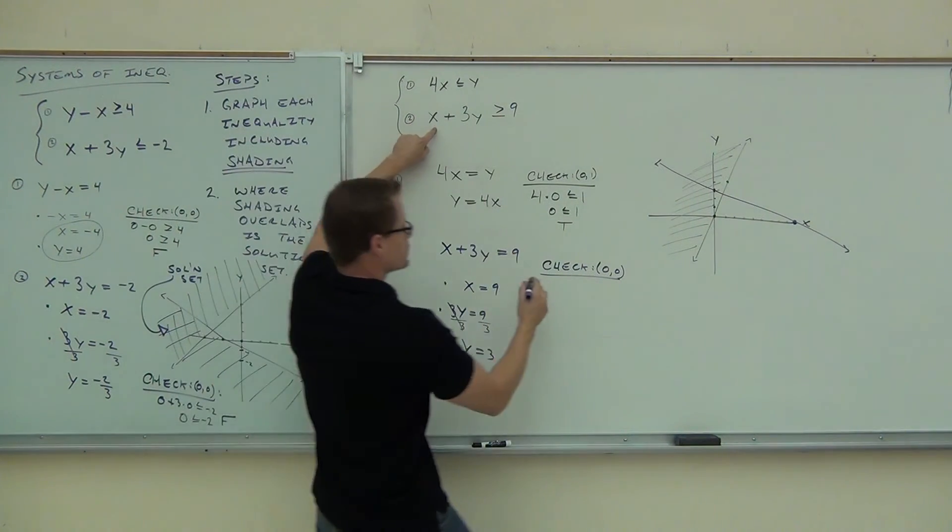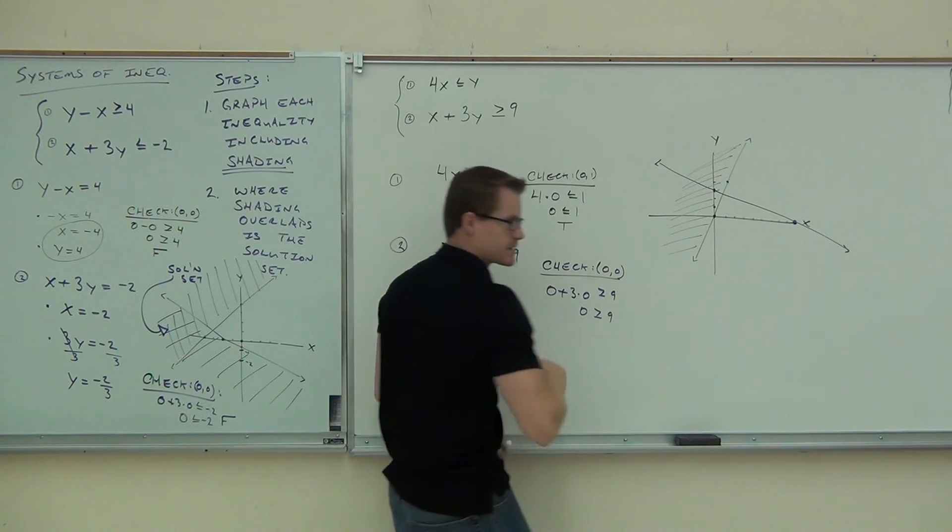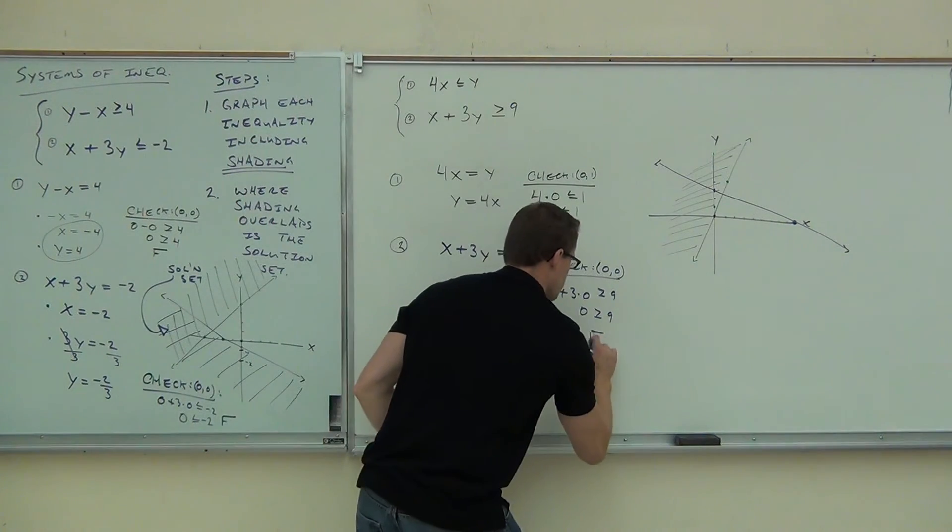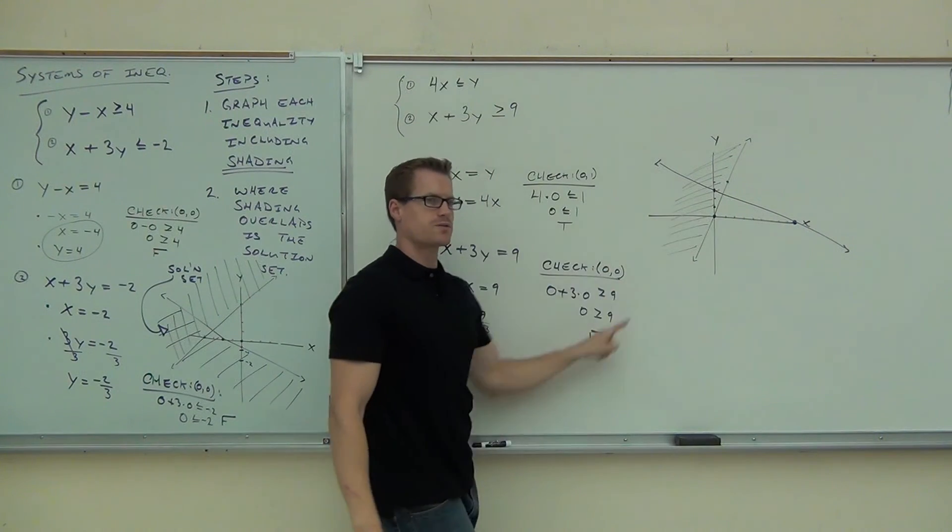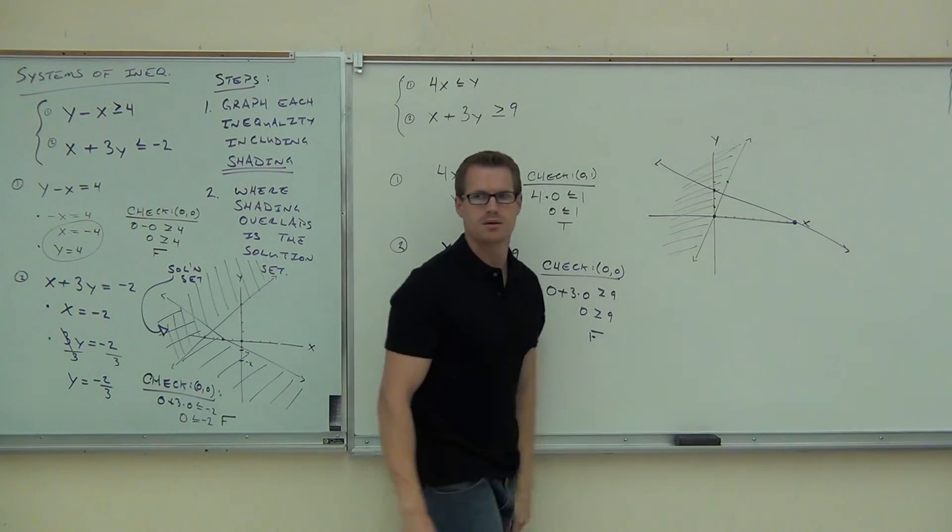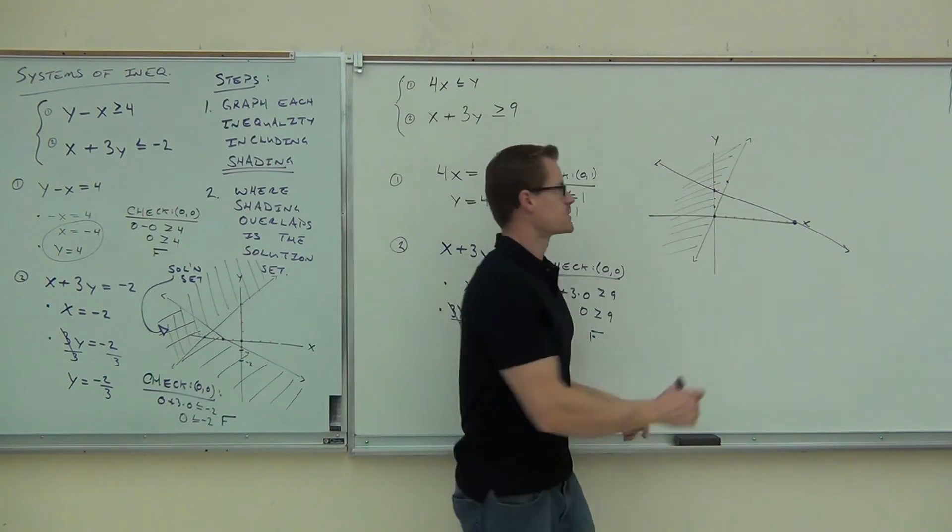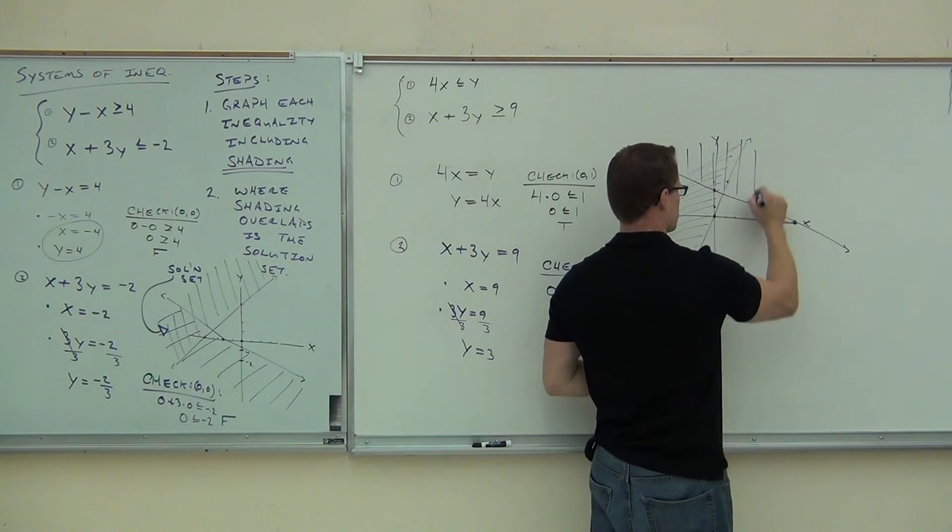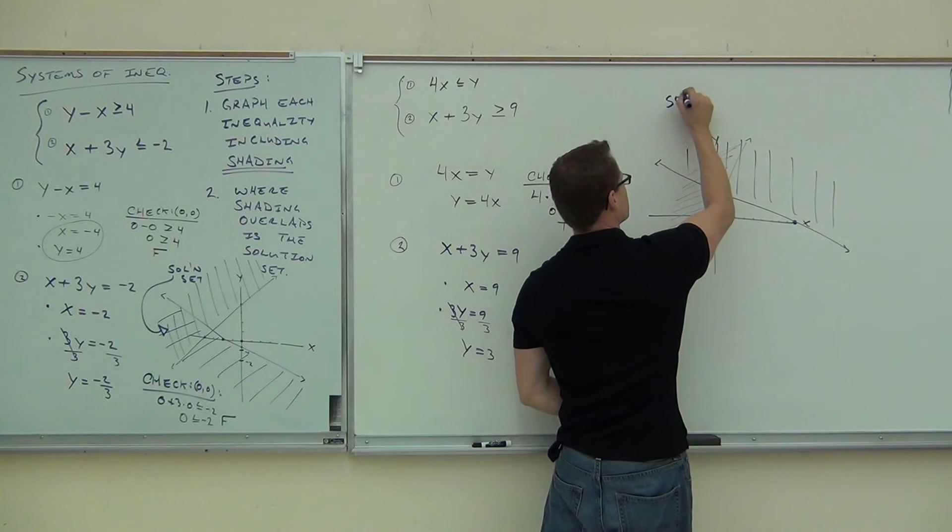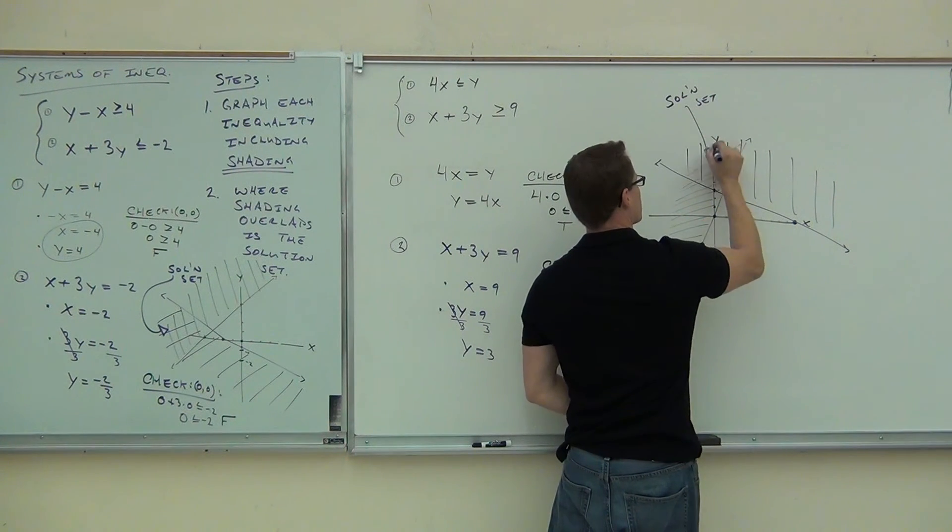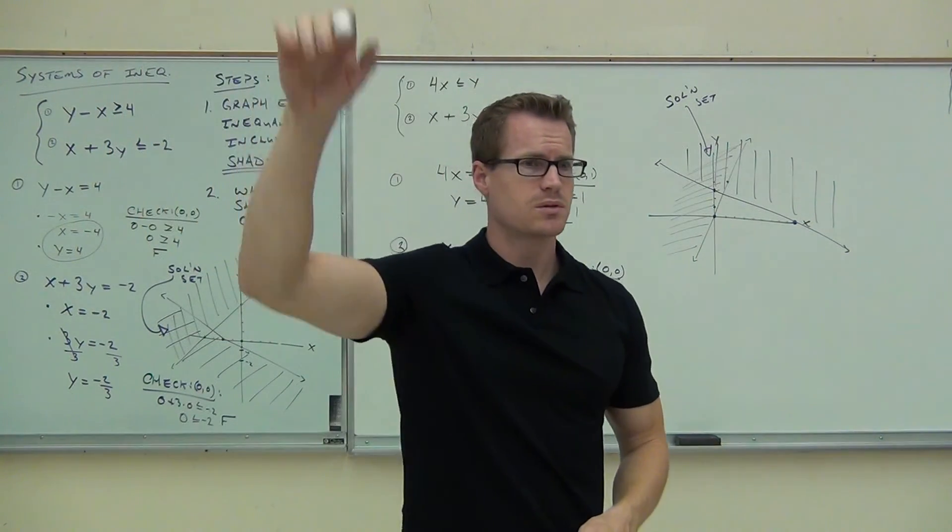If I check zero, zero, in the original inequality, zero plus three times zero is greater than or equal to nine. Zero is bigger than nine. Is that true or is that false? Definitely false. So we checked zero, zero this time. Zero, zero was false. Am I going to shade the bottom or the top half plane? This was false. Do I shade the bottom or the top? Definitely the top. Can you see my solutions? All these points will work in both of our inequalities. How many people feel okay with what we talked about today? Do you guys feel okay with these examples? Good.